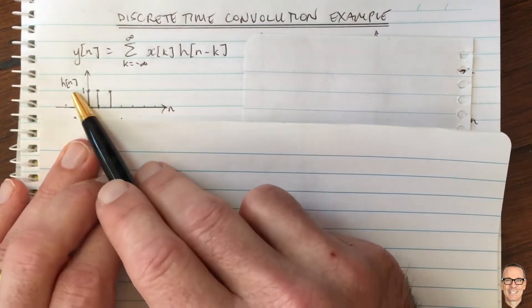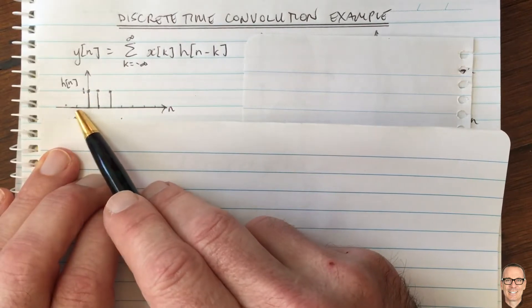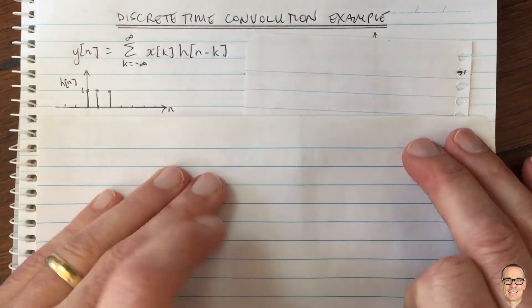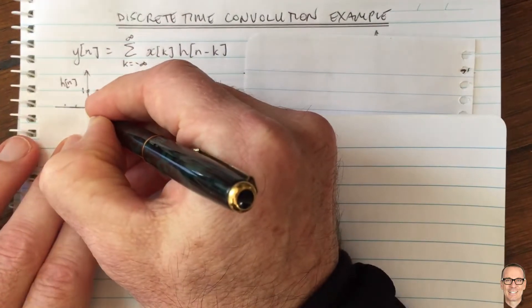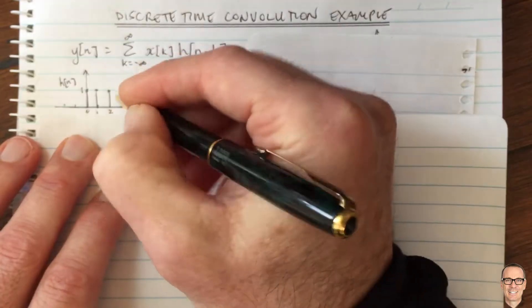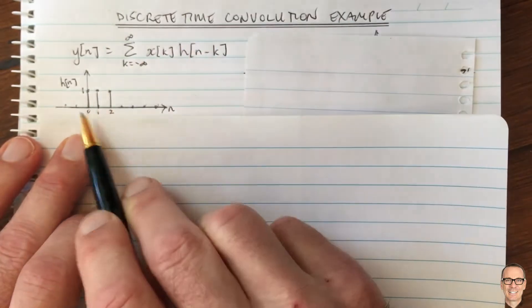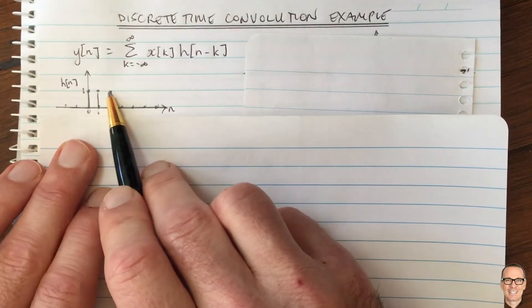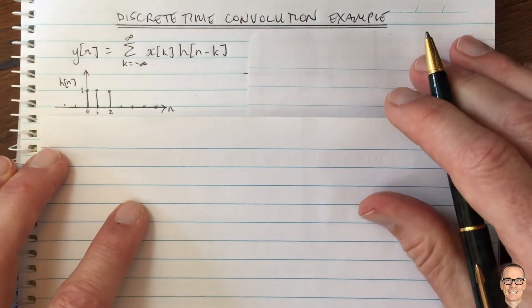In this example, the impulse response h has no response for negative time and has responses at three times after the impulse. This is what we call the impulse response, and it has non-zero values at three elements: time zero, time one, and time two. In this case they all equal one, and then there's zero everywhere else.